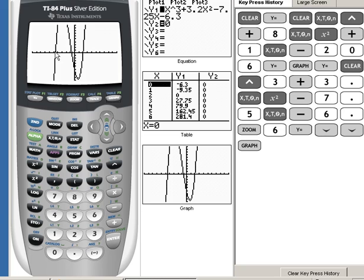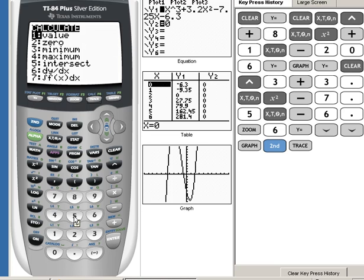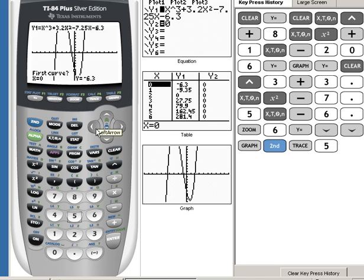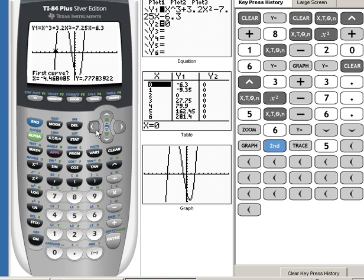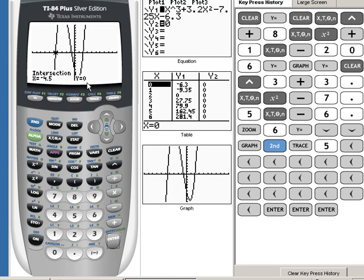And because of that, we can now intersect and find where those things meet. So I'm going to hit 2nd, trace, and choose number 5 for intersect. And now I'm going to move my cursor to the left. You can see it moving up higher there as I move to the left. And here we go. We're starting to come back down now. So I'm going to get that as close as I can, and then I'm going to hit enter, enter, enter. And my first point of intersection, my first x-intercept, is at negative 4.5 comma 0.